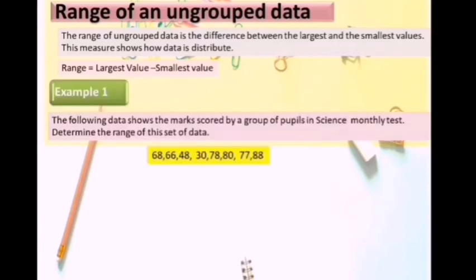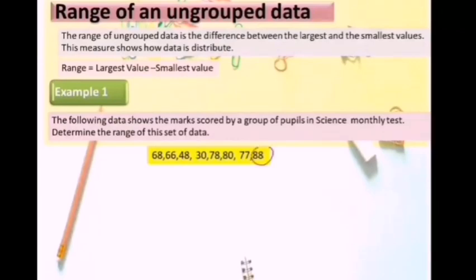Now we look at Example 1. The following data shows the marks scored by a group of pupils in science monthly tests. Determine the range of this set of data. The formula for range is largest value minus smallest value, so we find the highest mark minus the lowest mark. The range equals 88 minus 30, which equals 58.